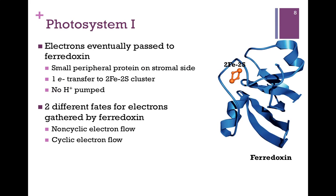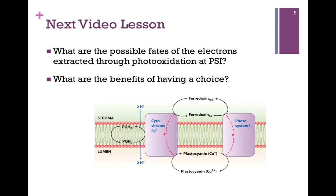There are two possible fates for the electrons gathered by ferredoxin, referred to as non-cyclic and cyclic electron flow. We're going to examine that in our next lesson, and we'll see what the benefits are of having a choice in what we do with the electrons we collect.